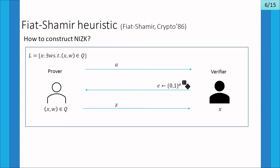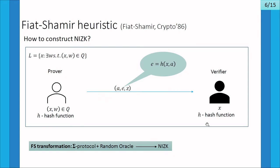The Fiat-Shamir heuristic is a well-known technique that can be applied to interactive protocols to obtain non-interactive protocols. If we start with a three-move interactive protocol in which the prover sends a first message A, the verifier sends a random challenge E, and the prover replies with a response Z, we can make this protocol non-interactive by replacing the verifier's random challenge with the evaluation of a hash function on input X and the first message A. It can be proved that if we start with a sigma protocol and model the hash function as a random oracle, we get a non-interactive zero-knowledge argument system.